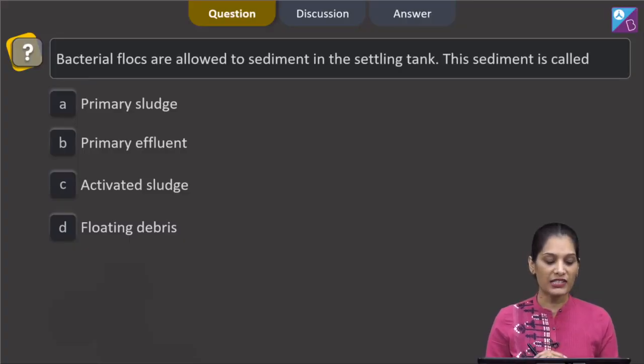This question says that bacterial flocks are allowed to sediment in the settling tank. This sediment is called A primary sludge, B primary effluent, C activated sludge, or D floating debris.